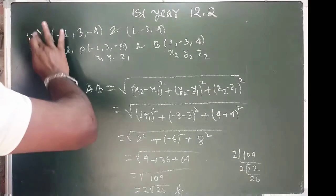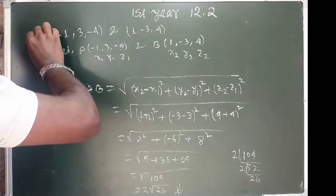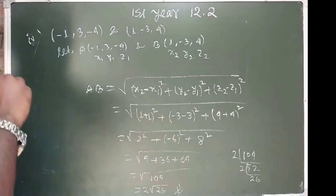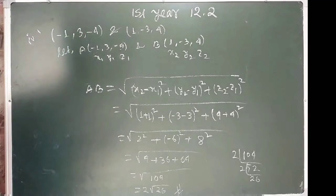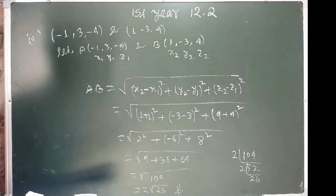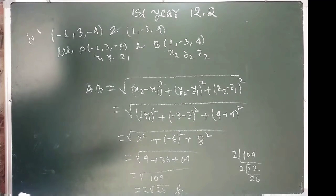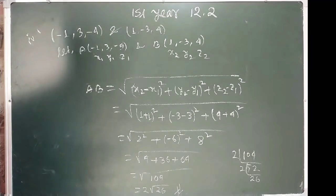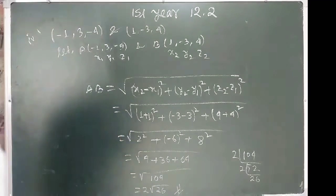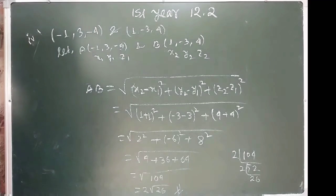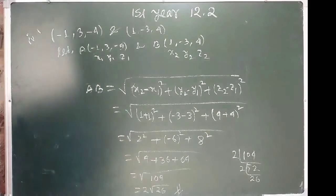Similarly, I will put it on the homework. So the next point is (2, minus 1, 3) and (minus 2, 1, 3).